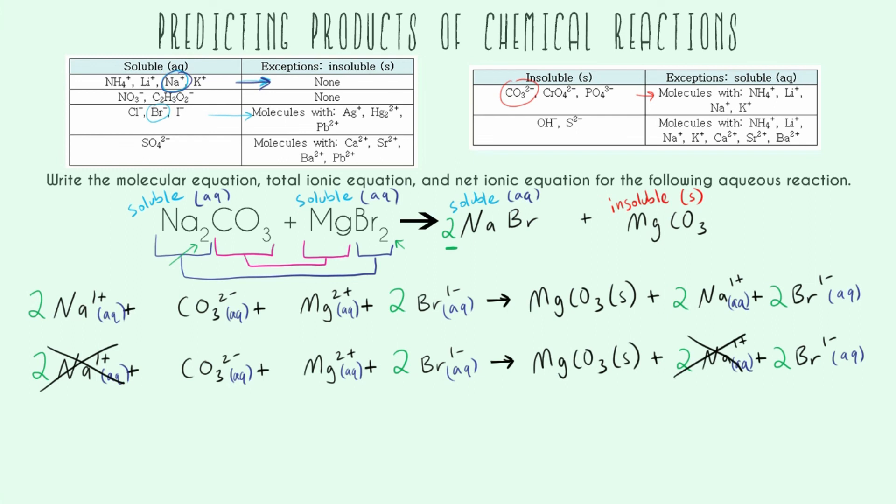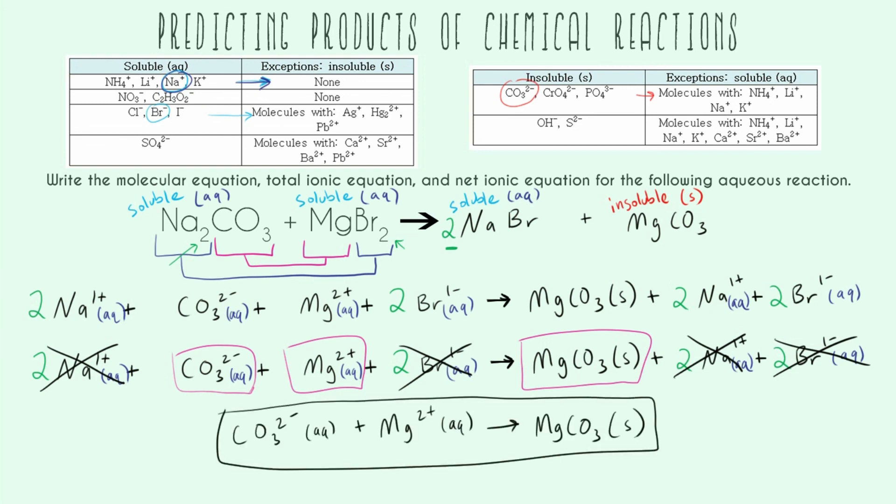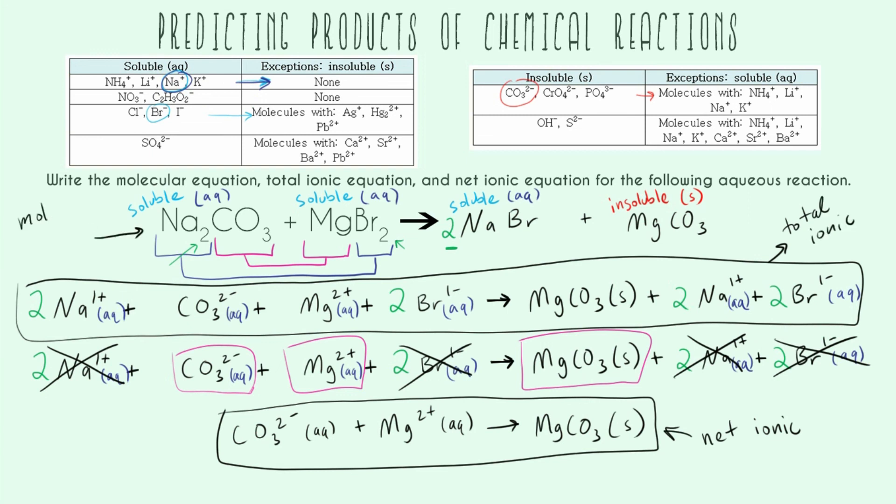I also have 2 bromine minus 1 on the left-hand side and the right-hand side. So it didn't really do anything either. So my only things that did anything were my carbonate, my magnesium, and that became magnesium carbonate. So my final answer, just rewritten for niceness, looks like this. This is my net ionic. This is my total ionic. And this is my molecular.